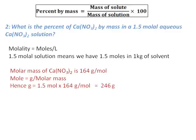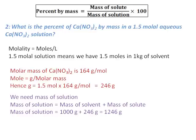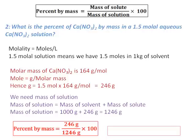Once I have the mass of calcium nitrate as the solute, I need the mass of solution. Because it is molality, the mass of solvent is 1 kilogram, or 1000 grams. Mass of solution equals 1000 grams plus 246 grams, which is 1246 grams. With both mass of solute and mass of solution, I can calculate percent by mass, which equals 19.7%.